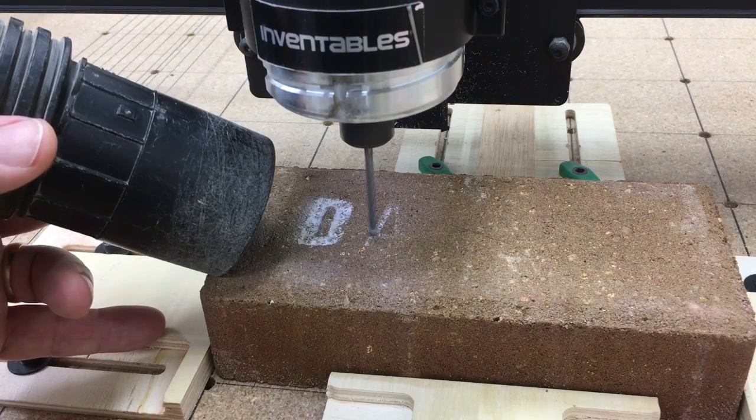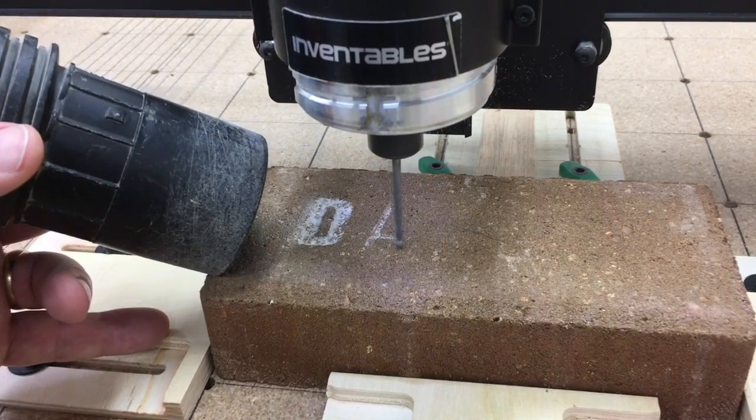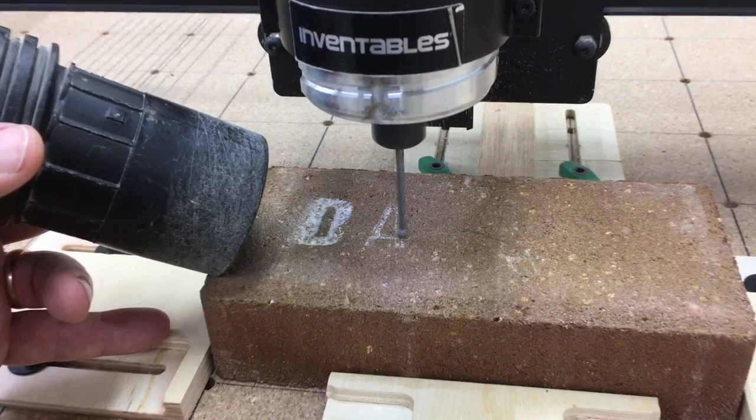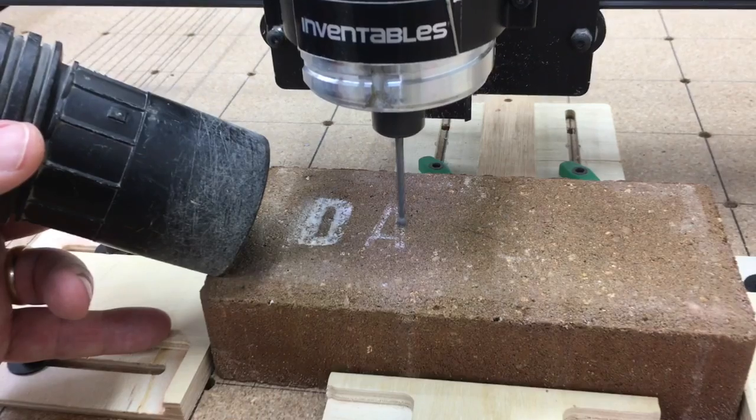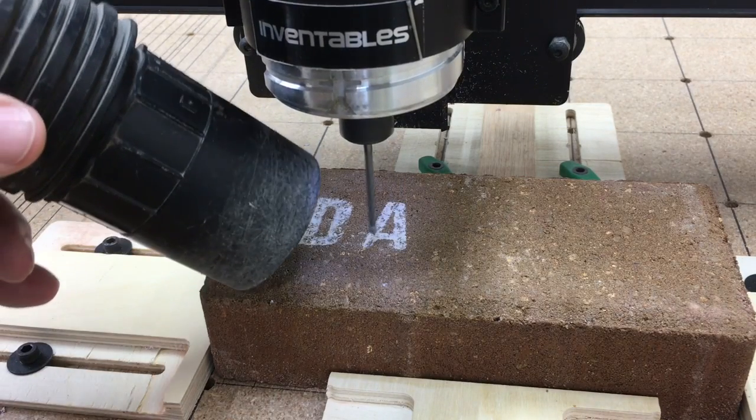As the letter A begins to carve, you can see it's just a very, very light score that it's just barely making a scratch on the brick. So after several passes, it's beginning to look like the letter A.